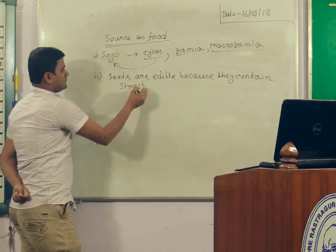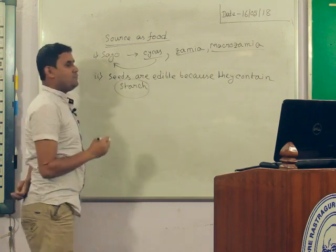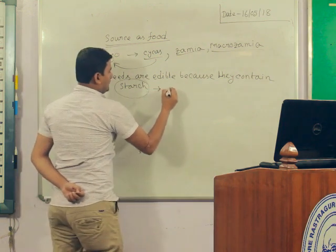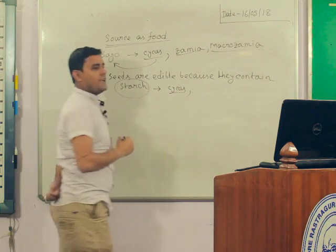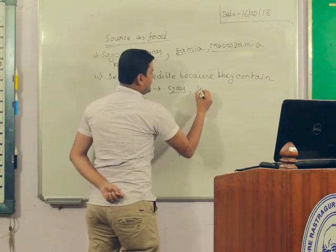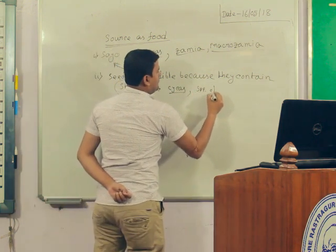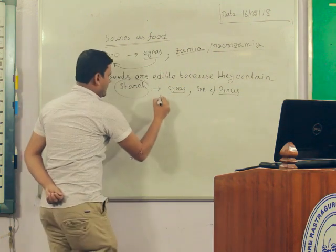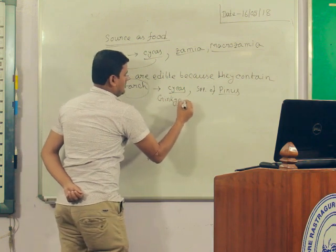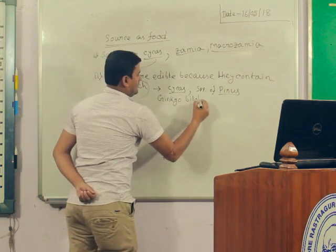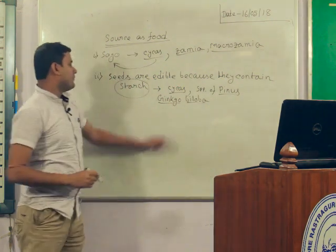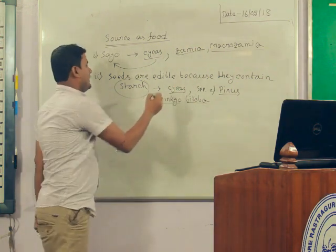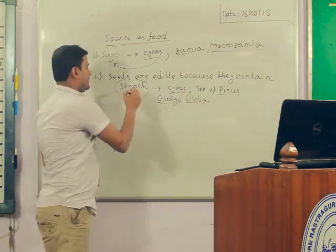Starch is obtained from seeds of certain gymnosperms: Cycas species, Pinus species, and Ginkgo biloba. From the seeds of these plants we can obtain starch.